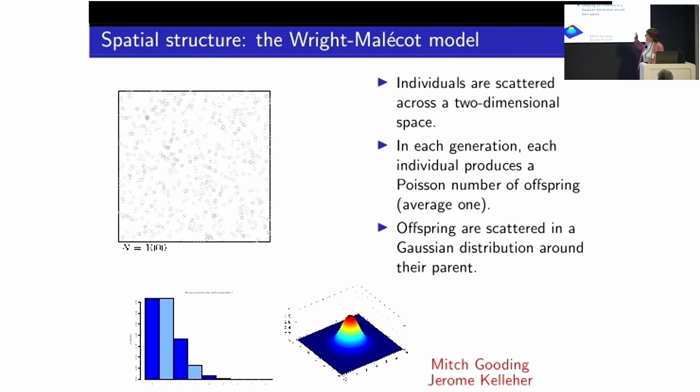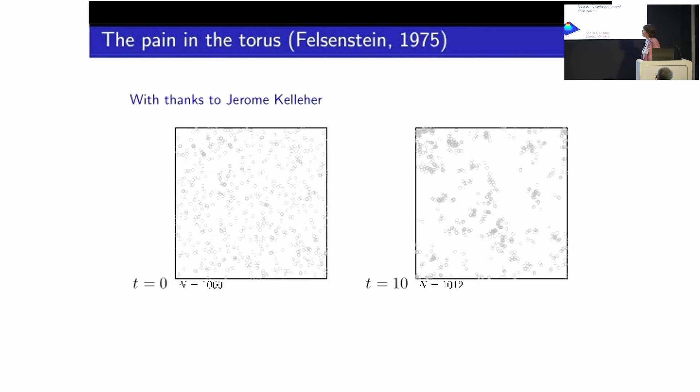Well, based on that assumption, they were able to write down really useful formulae. Things like, if I sample individuals at a separation X, they've got a certain genetic relatedness. But that's going to decay as I sample from further and further apart. And they were able to write down a formula that captured that decay. So remarkably powerful and useful formula. But unfortunately, then along came Felsenstein. And in 1975, Felsenstein observed that actually, oops, their model's not consistent. So this is best illustrated through a simulation. This is a simulation from a lab meeting that Jerome Kelleher produced.